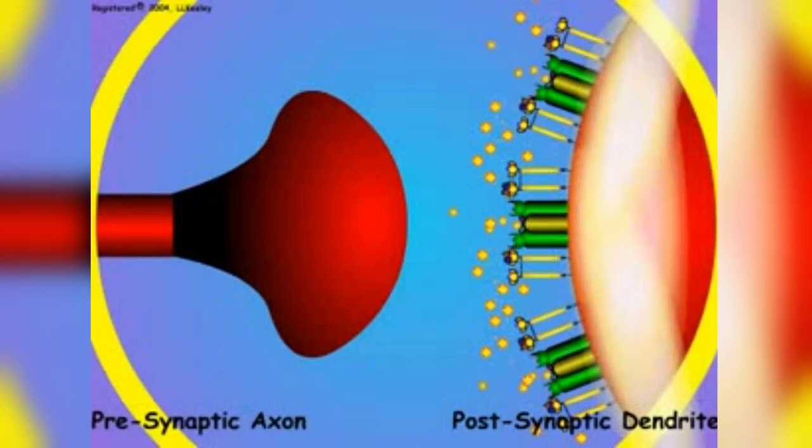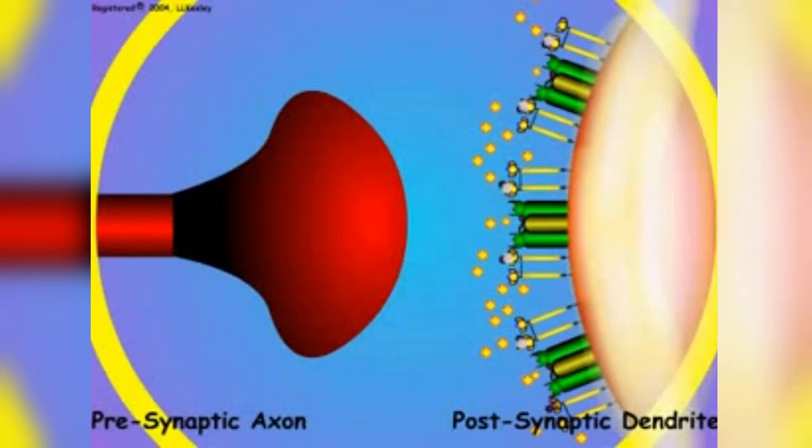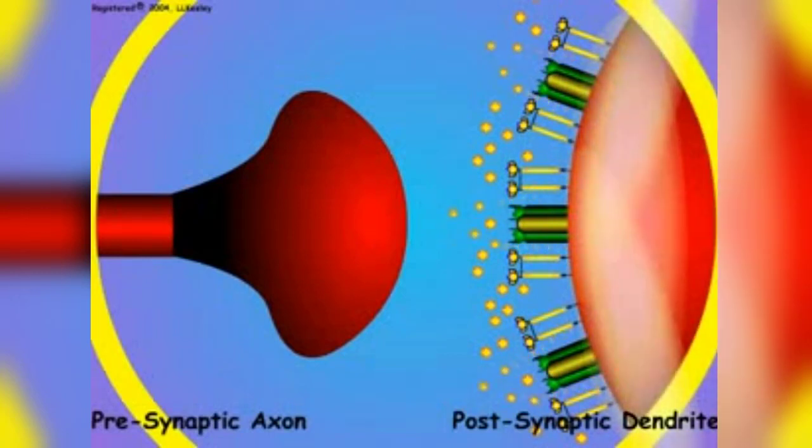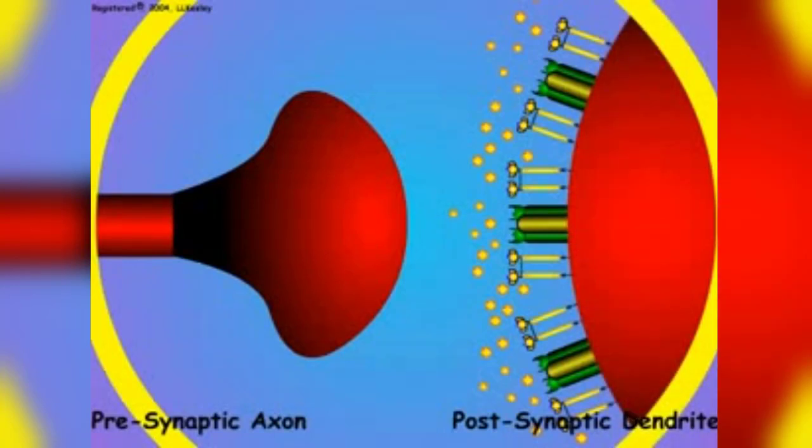When the neurotransmitter chemicals are eliminated, the postsynaptic sodium channels close, the sodium is transported back to the outside of the postsynaptic membrane by the reactivated sodium pumps, and the outside of the postsynaptic membrane returns to its normal positive charge.